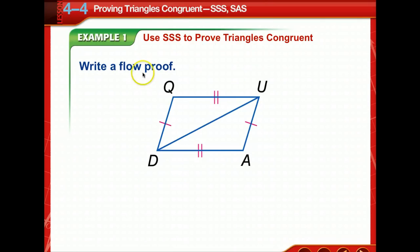So we're going to use side-side-side to prove triangles are congruent. They want us to write a flow proof, and let's just take a look at the figure for a moment. We notice that QU is congruent to AD, and QD is congruent to AU. So we've got two of the sides, so all we have to do is prove that this side is congruent. Anything coming to mind?